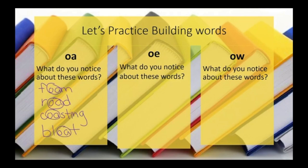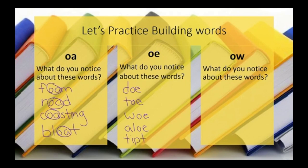Notice that in each of these with OA, the OA falls within the word. For the next part, we're going to look at OE. With the OE sound, we have words like doe, toe, woe, aloe, tiptoe. Notice that for all these with OE in the word, they all come at the end of the word.